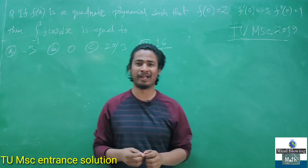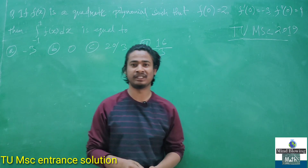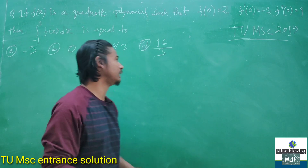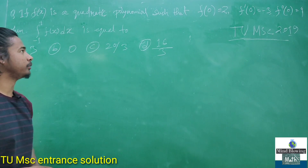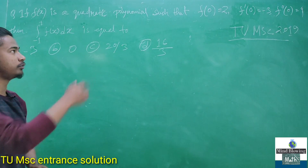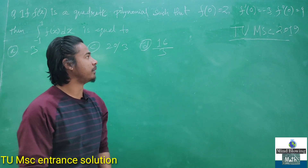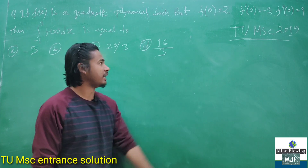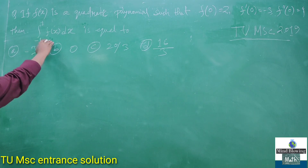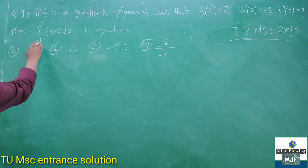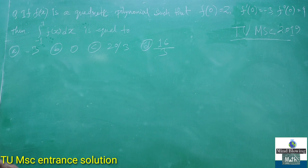Hello everyone, welcome to Mind Blowing Math. This question is from HB University MXC entrance 2019. The question is: if f is a quadratic polynomial such that f(0) = 2, f'(0) = -3, and f''(0) = 4, then find the integral value from -1 to 1 of f(x) dx.